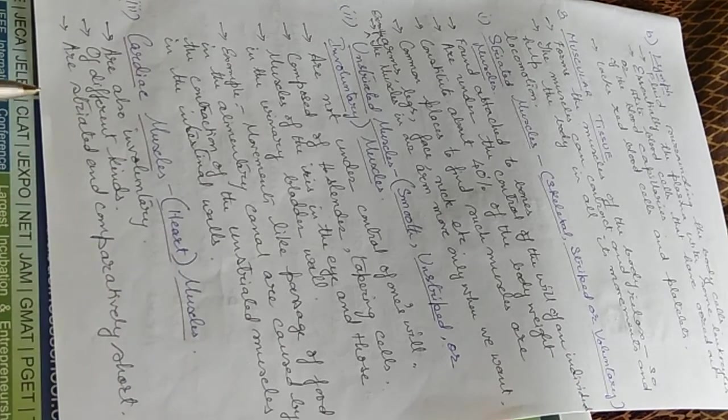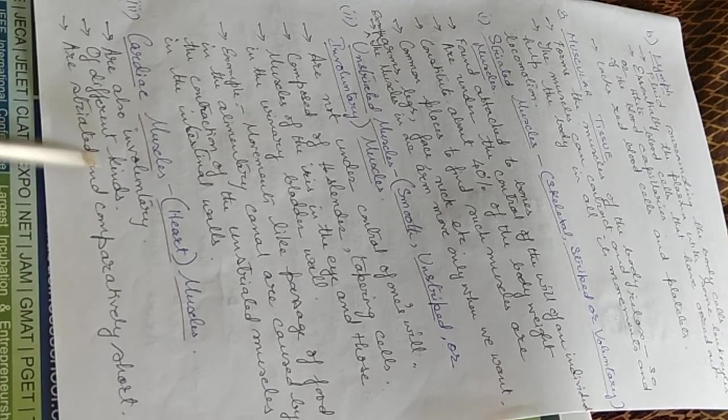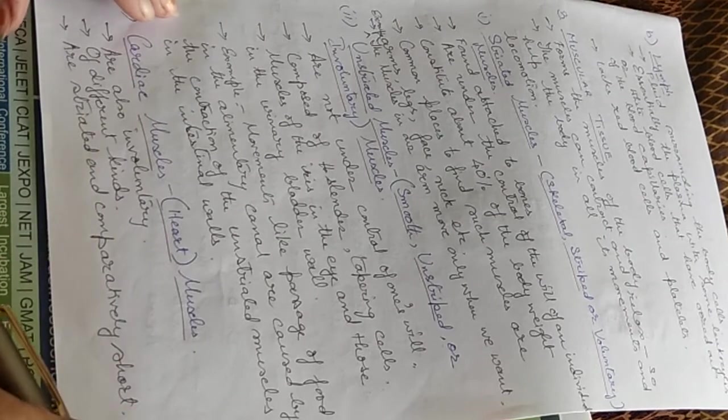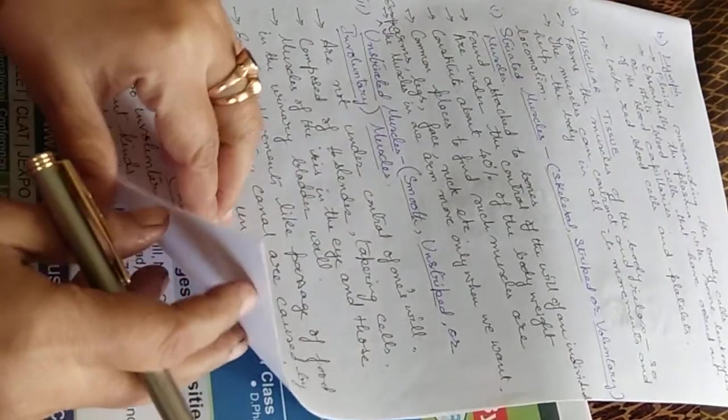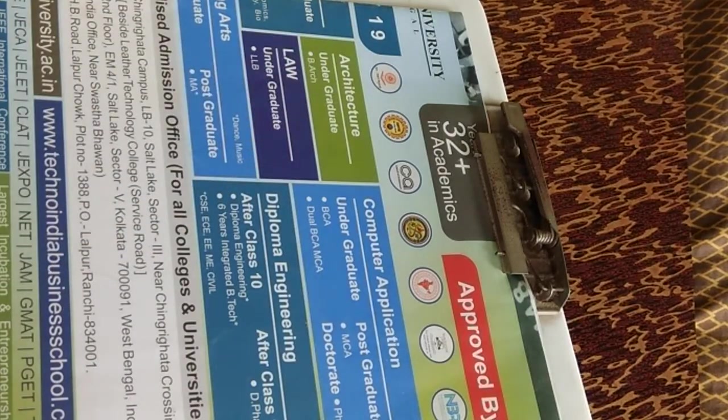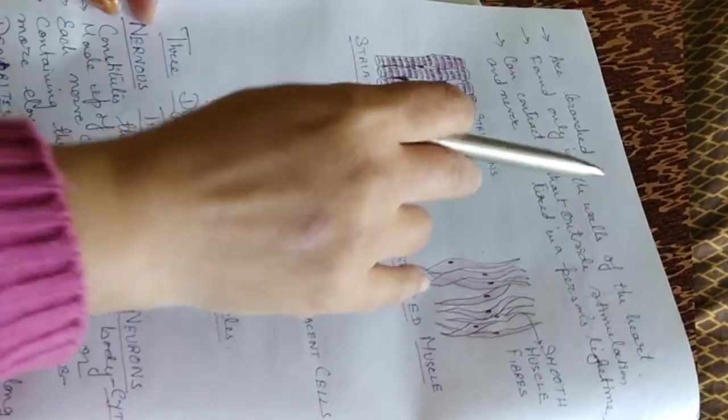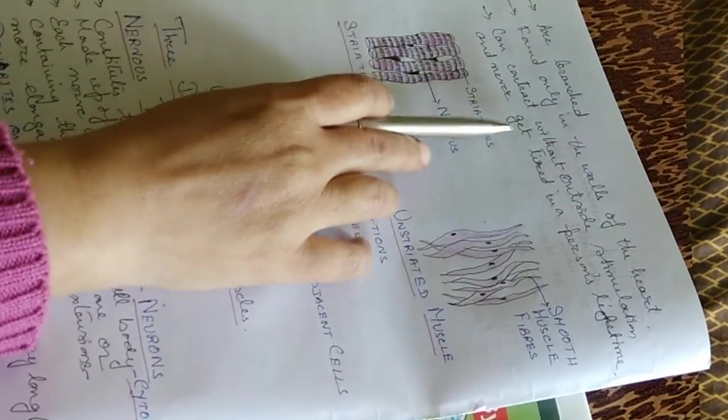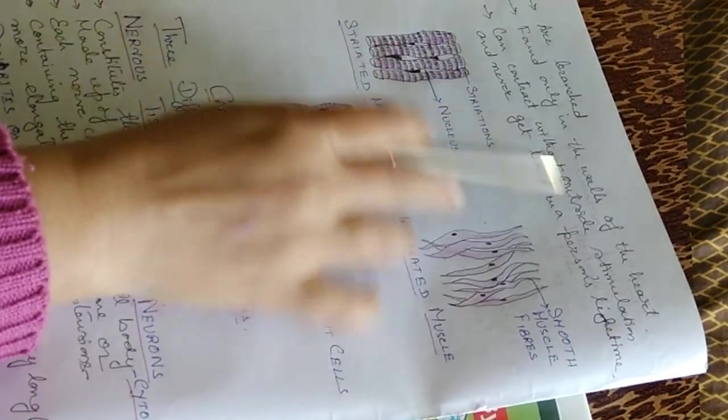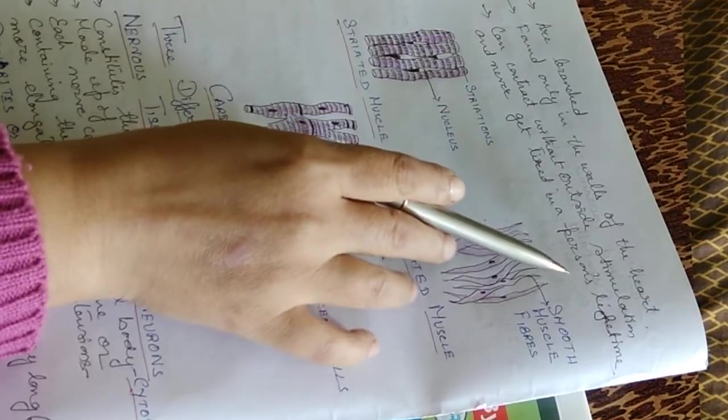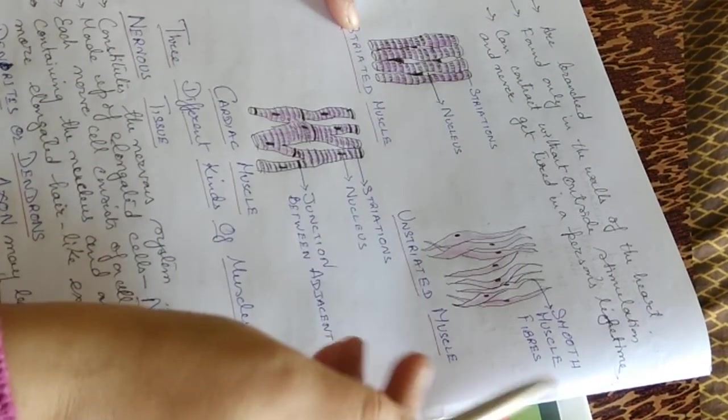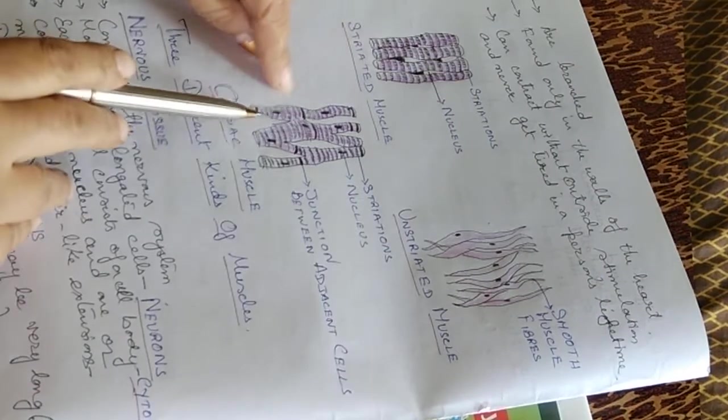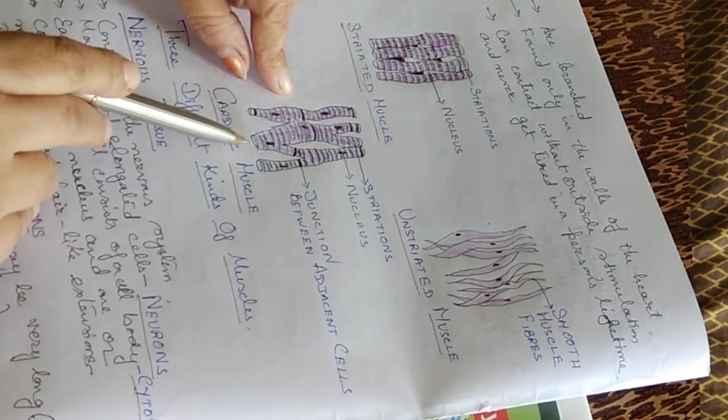The cardiac muscles, the heart muscles, are involuntary muscles. They are of different kinds. They are striated and comparatively short. Striated but they are involuntary. They are branched. They are found only in the walls of the heart. They can contract without outside stimulation and never get tired in the person's lifetime. This is the striated muscle, how they look like. These are the unstriated muscles and this is the cardiac muscle.